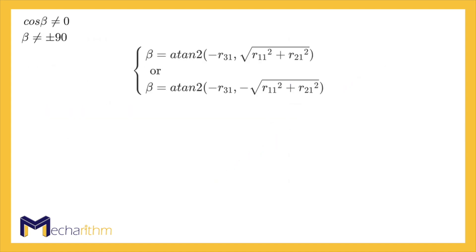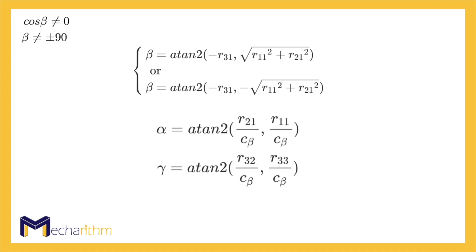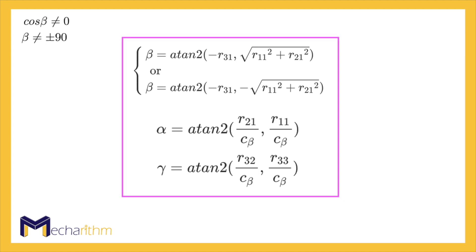For the case when cosine beta is not equal to zero — and thus beta is not equal to 90 degrees and minus 90 degrees — we found beta in the previous slide as these equations. With the expressions for beta, we can find alpha and gamma using these equations. These equations for alpha, beta, and gamma constitute a solution for the inverse problem to the ZYX Euler angles when cosine beta is not equal to zero.